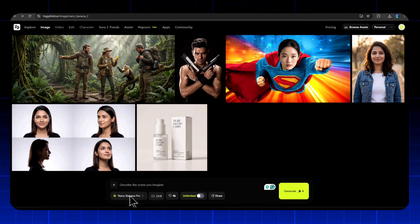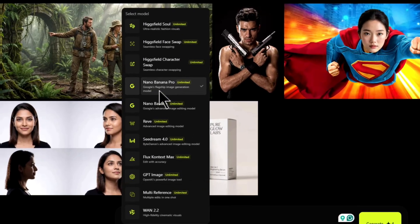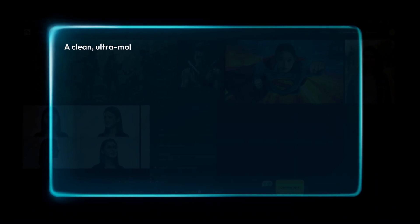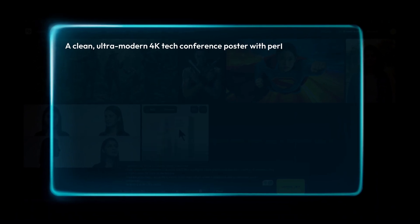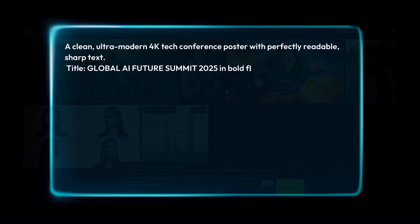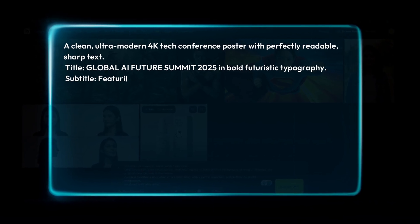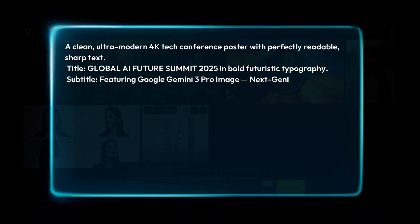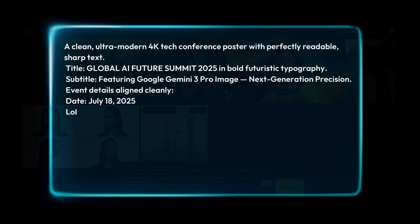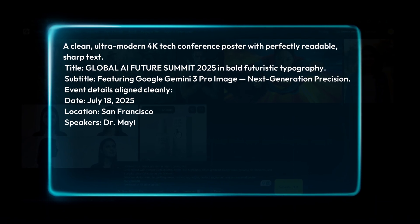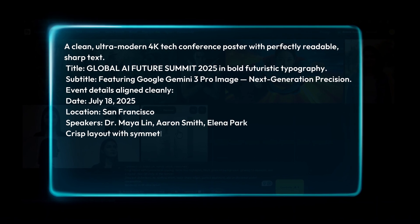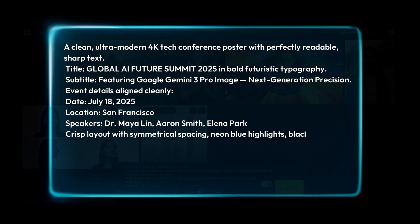First, click on the model selector and make sure Nano Banana Pro is selected. Now type your image idea in the prompt box. For example: a clean, ultra-modern 4K tech conference poster with perfectly readable, sharp text. Global AI Future Summit 2025 in bold futuristic typography. Subtitle featuring Google Gemini 3 Pro Image Next Generation Precision. Event details align cleanly. Date: July 18th, 2025, location San Francisco. Speakers: Dr. Maya Lin, Aaron Smith, Alina Park.